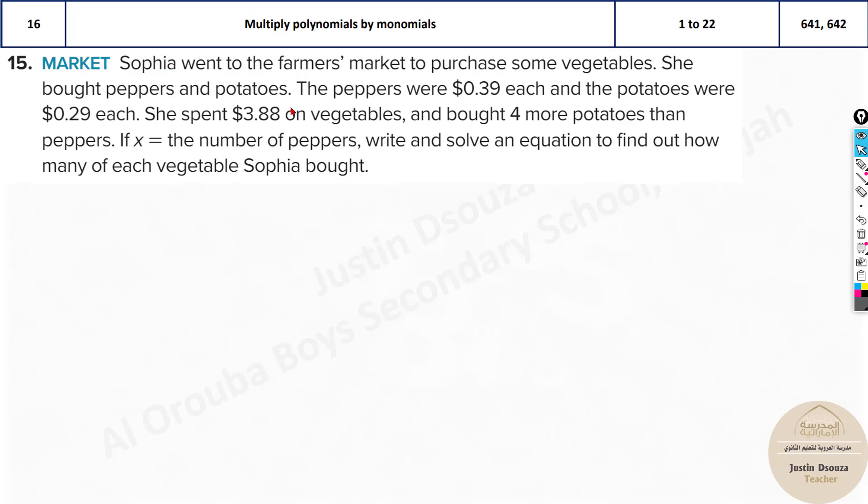Question 15. Sophia went to the farmer's market to purchase vegetables. She bought peppers and potatoes. The peppers cost $0.39 each and the potatoes $0.29 each. She spent $3.88 on vegetables and bought 4 more potatoes than peppers. So if X is the number of peppers, potatoes is X plus 4. The cost of peppers is 0.39X. Potatoes is 0.29. Add these both, it must be 3.88.